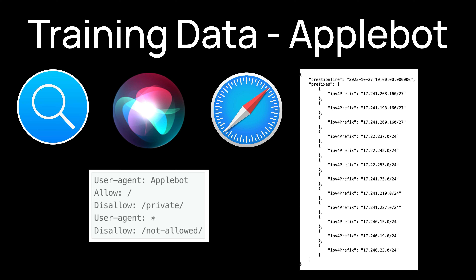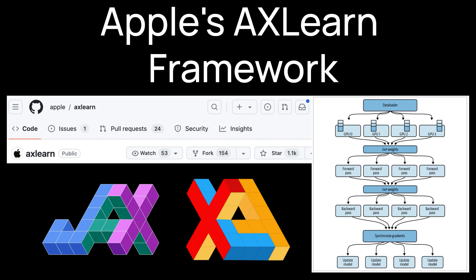Listed here are the public IPs of the Applebot crawler. True to their commitment to user privacy, no private user data is used to train any of their foundation models. Additionally, they remove low-quality content such as profanity. Apple's foundation models are trained using their Axlearn framework, which was open-sourced in 2023. It's built on JAX and XLA and optimized for both TPUs and GPUs using a combination of data parallel, tensor parallel, sequence parallel, and fully sharded data parallel distributed training strategies.